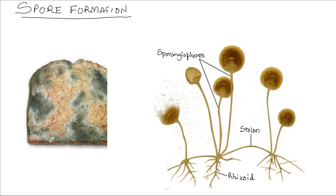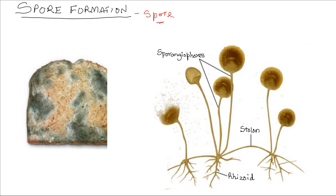Spore formation is another type of asexual reproduction. A spore is a unicellular microscopic structure used for asexual reproduction. It contains a nucleus and some cytoplasm. A spore may be produced through mitosis, or in some cases even meiosis. Spores are usually small, light, and easily dispersed.